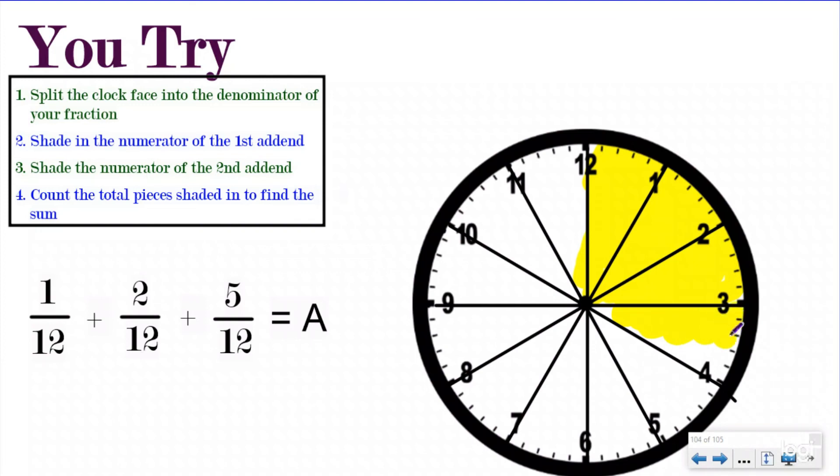And now I want to add my third addend. So I need to add five more pieces. So that's going to be one, two, three, four, five. I want to add all of these pieces to that by shading them in. Try to be kind of neat there. There we go. And when I do that, I can see that A equals eight-twelfths. I have one, two, three, four, five, six, seven, eight pieces shaded in. And I still have 12 total pieces, which means my denominator didn't change.